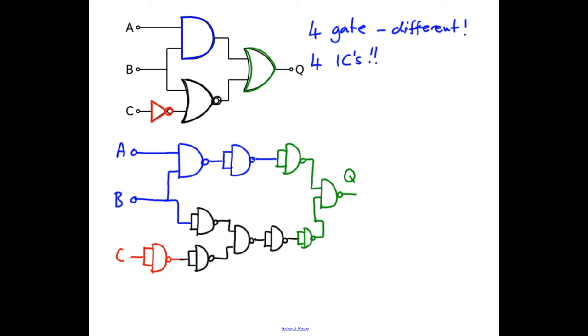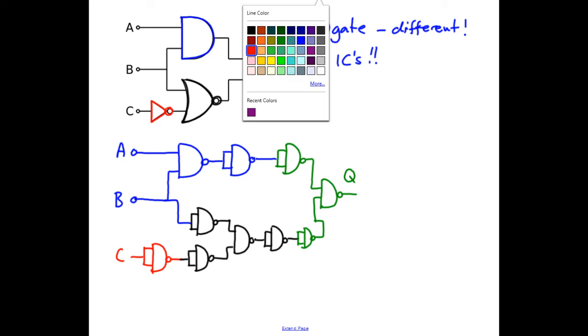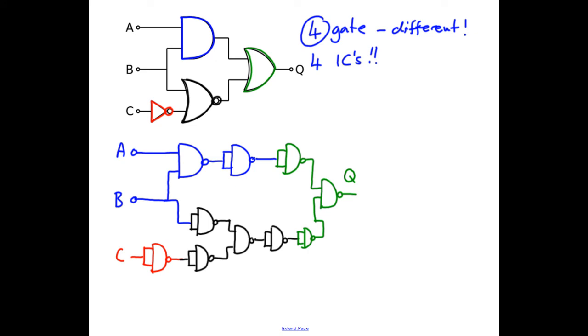And this looks even worse. We only had 4 logic gates in our initial circuit. Now we've got 1, 2, 3, 4, 5, 6, 7, 8, 9, 10. That's much worse. However, what we have to remember is that 2 NOT gates following each other are equivalent to a piece of wire. So these 2 are equivalent to a piece of wire, these 2 are equivalent to a piece of wire, and these 2 are equivalent to a piece of wire. So now we only have 4 chips remaining. But we only had 4 gates in the first circuit, so we've not really gained anything, have we?